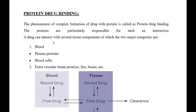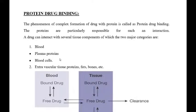Today we have discussed the components of plasma protein binding. The first component was blood, which has two sub-components: plasma proteins and blood cells. In today's lecture we discussed the different plasma proteins responsible for drug binding. Next time we will discuss blood cell protein interactions, extravascular tissue proteins, or tissue binding of drugs. This is all for today's lecture. Thank you.